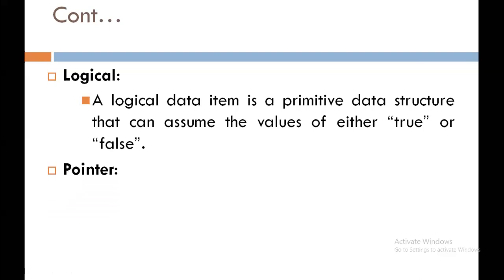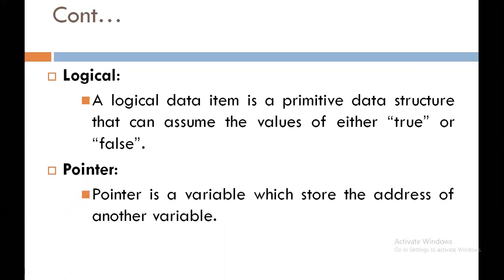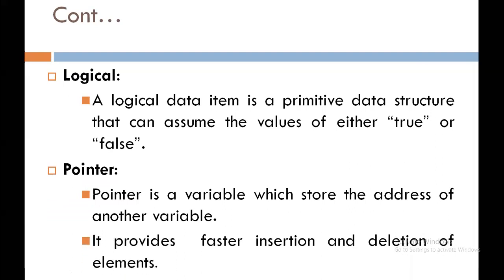Next is pointer. A pointer is a type of variable which stores the address of another variable. A variable generally stores a value, but a pointer variable stores an address — the address of another variable. It provides faster insertion and deletion of elements.